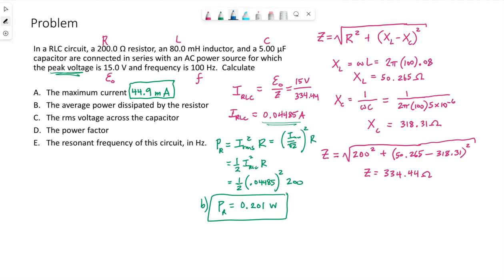To get IRMS, I need to take the maximum value over the square root of 2. So this becomes one half of our max current squared times R. One half times 0.04485 squared, and then R is 200. So this power is 0.201 watts. That's for part B. For part C, the RMS voltage across a capacitor. If I look at the line for just the capacitor, the current, this would represent the peak current.